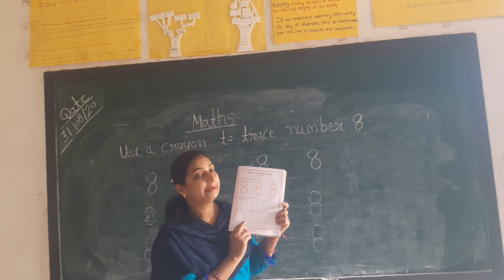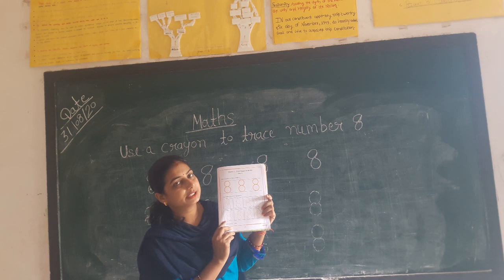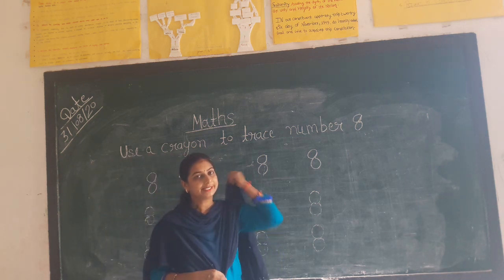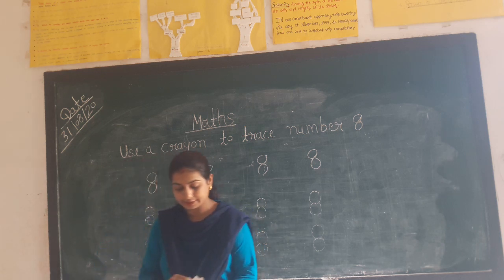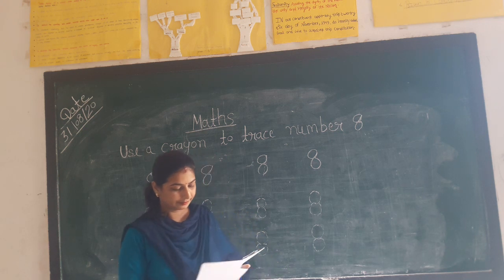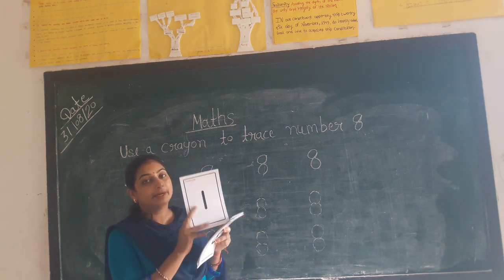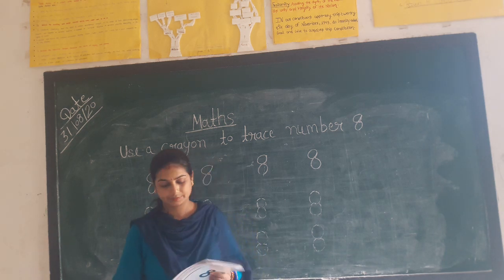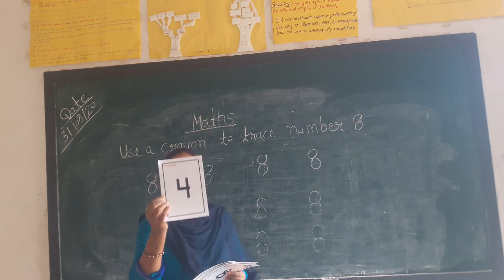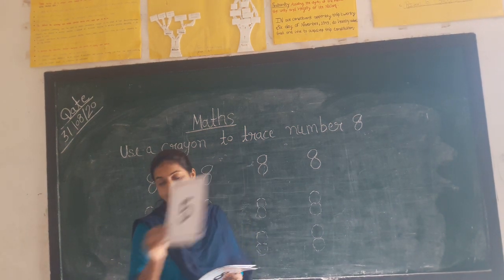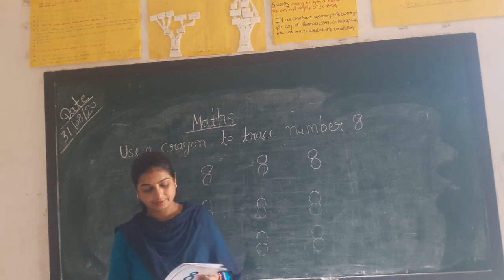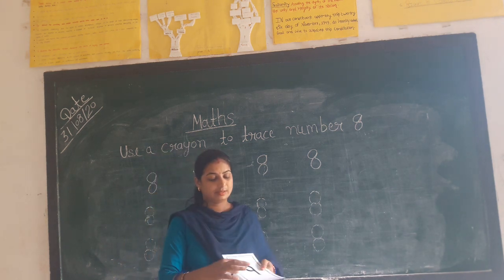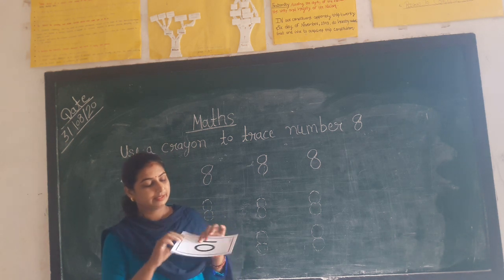You are trying to trace number 8. Number 8 — press it to write directly. So what are you trying to do? First we are counting. Number 1, number 1, two, three, four, five, six, seven, eight, nine, ten.